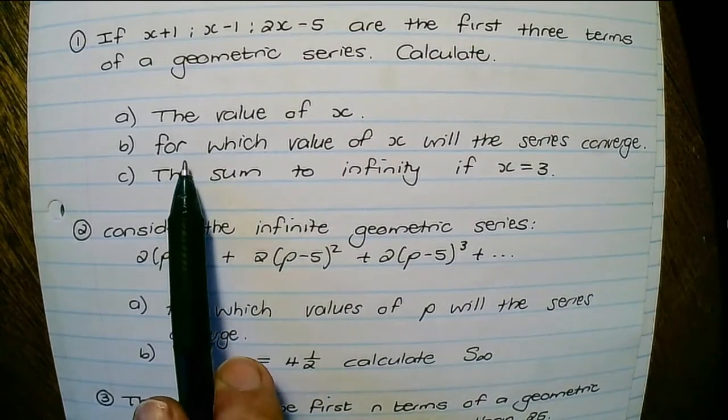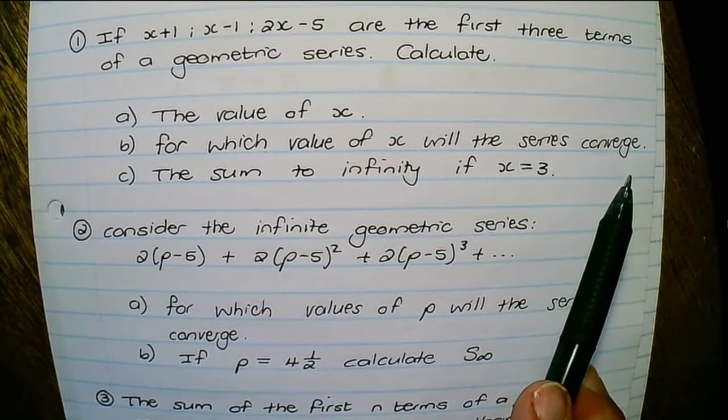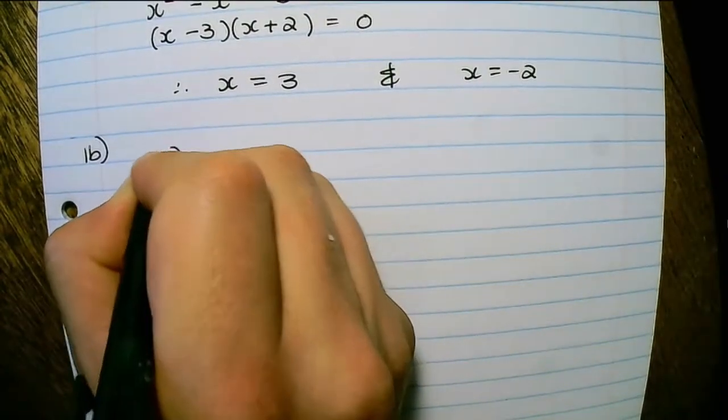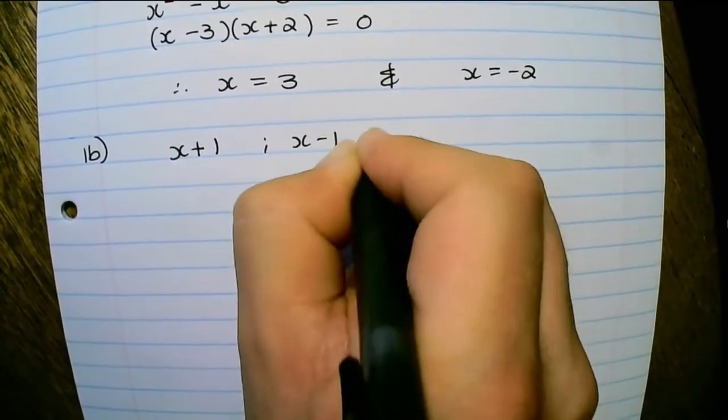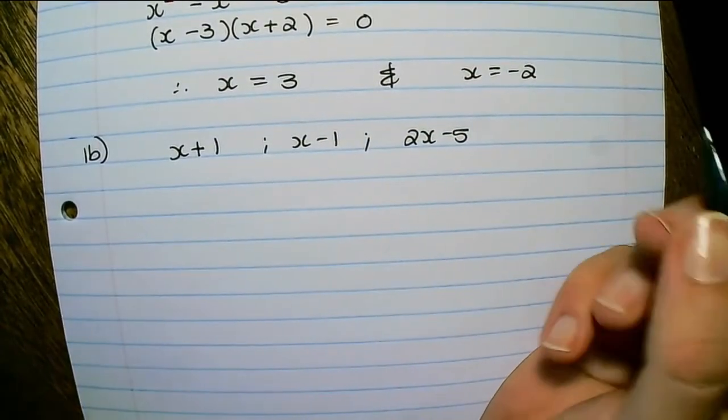The second question is for which value of x will the series converge? So what I know is that x plus 1, x minus 1, and 2x minus 5 is the pattern.